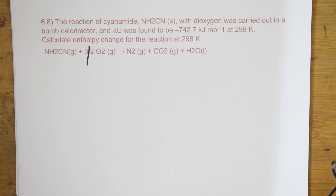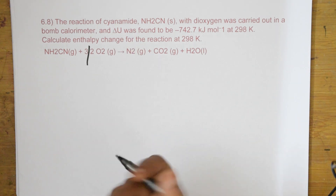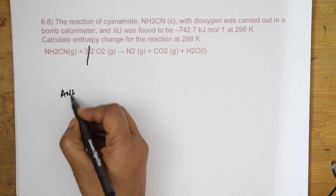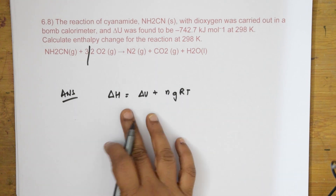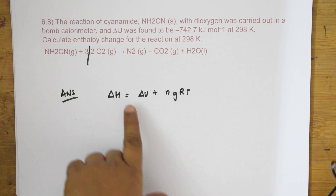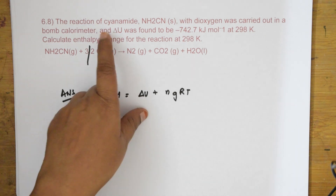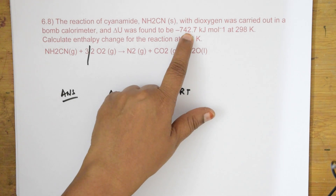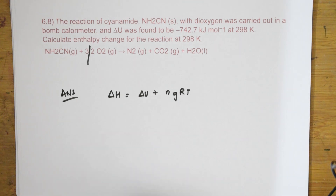We need to calculate enthalpy change ΔH. The formula relating enthalpy and internal energy is: ΔH = ΔU + ΔngRT. We have the ΔU value, the R value, the T value — we only need to calculate Δng.